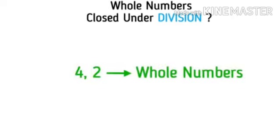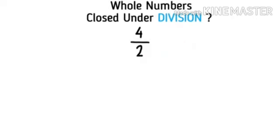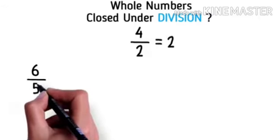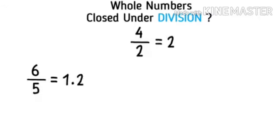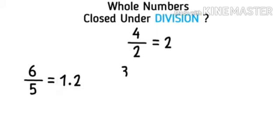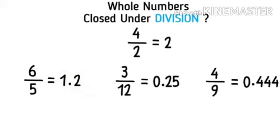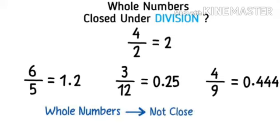4 and 2 are whole numbers and if we divide 4 by 2, we get a whole number again. But if we divide 6 by 5, the answer we will get will be in decimals which is not a whole number. Similarly, examples such as 3 divided by 12, 4 divided by 9 will not result in whole numbers. Hence we say that whole numbers are not closed under division.